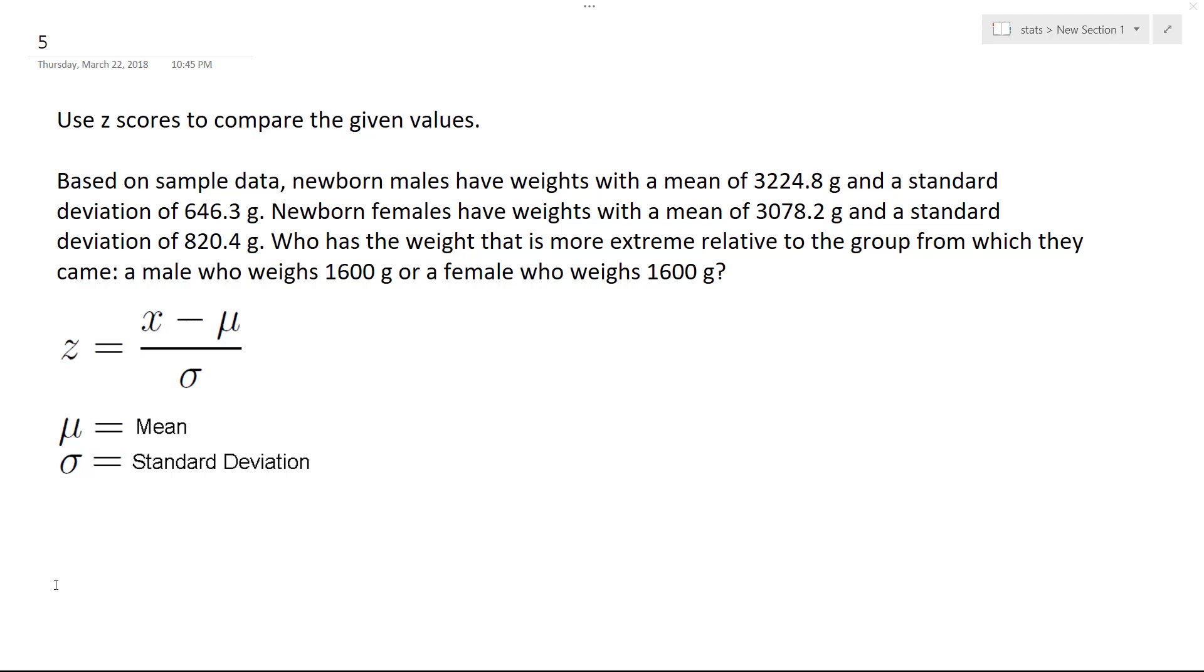All right, so we have some z-scores to compare. Based on the sample, newborn males have a weight mean of 3224.8 grams and a standard deviation of 646. The same thing is stated for females. So who has the weight that is more extreme relative to the group which they came from: a male that weighs 1600 grams or a female that weighs 1600 grams?